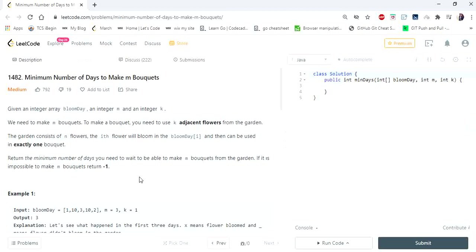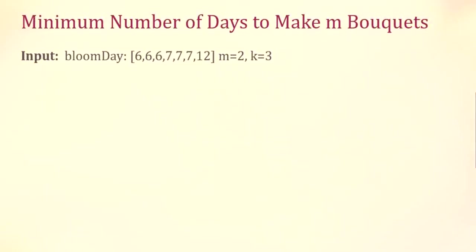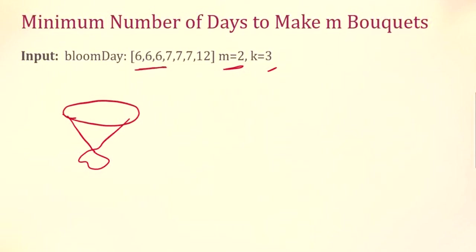Let's understand this with an example. Consider the first example: we have to make two bouquets and each bouquet should have three adjacent flowers. For our first bouquet we need three flowers, so we have to wait a minimum of six days. On the sixth day we will get three flowers, and we'll make one bouquet with those three flowers.